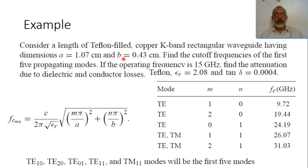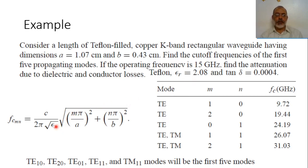The cutoff frequency is obtained as 1 over 2·pi times square root of mu·epsilon. Since 1 over square root of mu·epsilon equals C over square root of epsilon_r, the cutoff frequency of the MN mode is C over (2·pi · sqrt(epsilon_r)) times the square root of (m·pi/a)² plus (n·pi/b)².